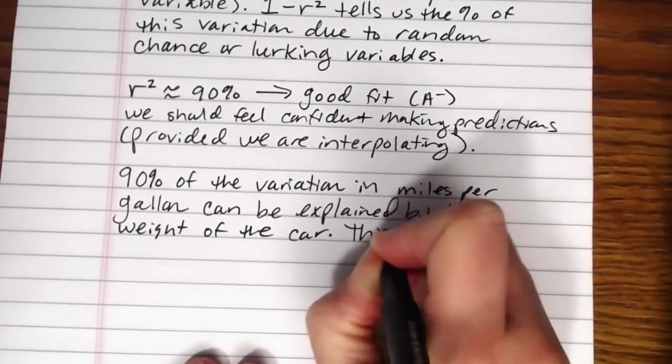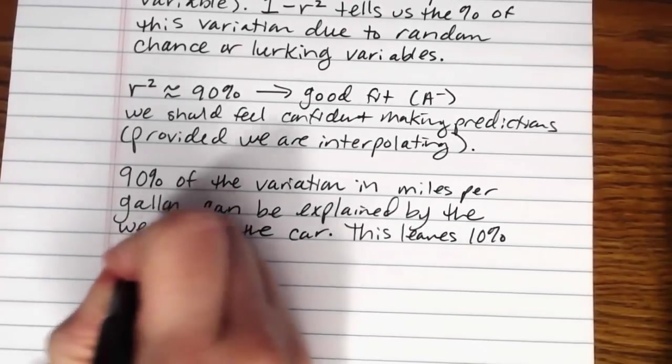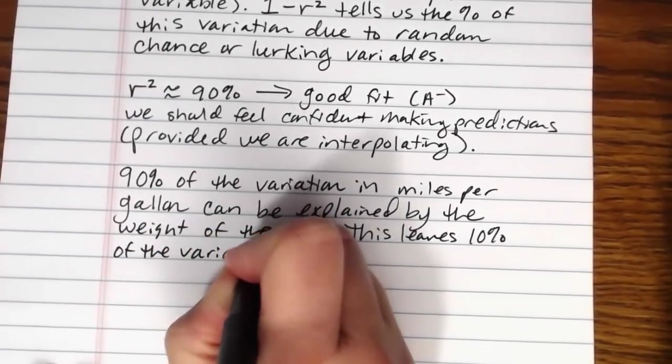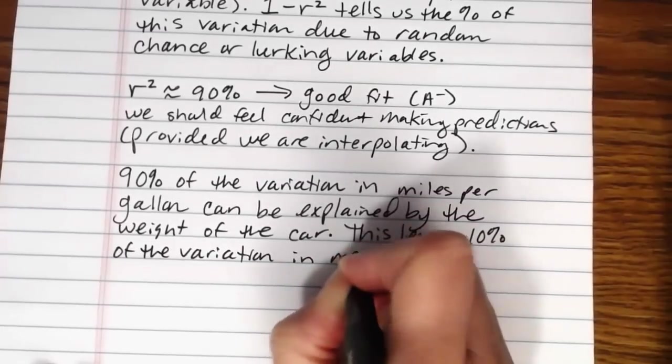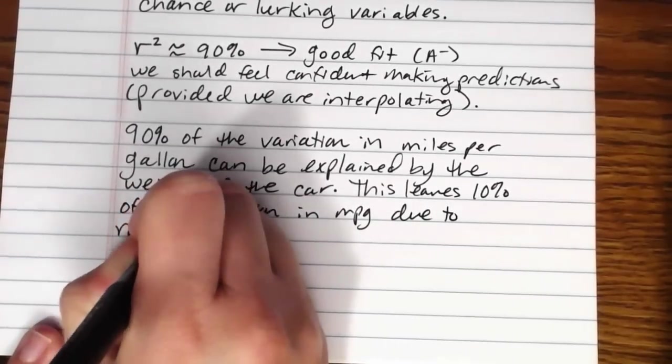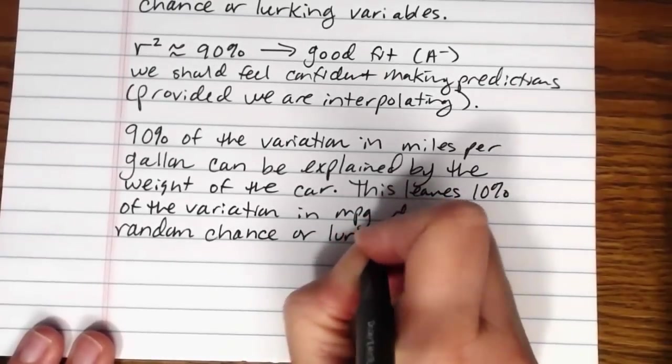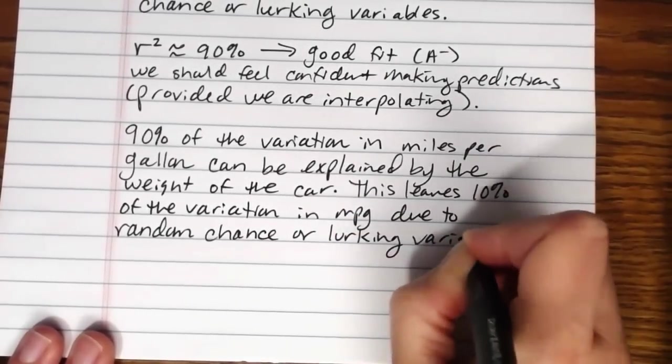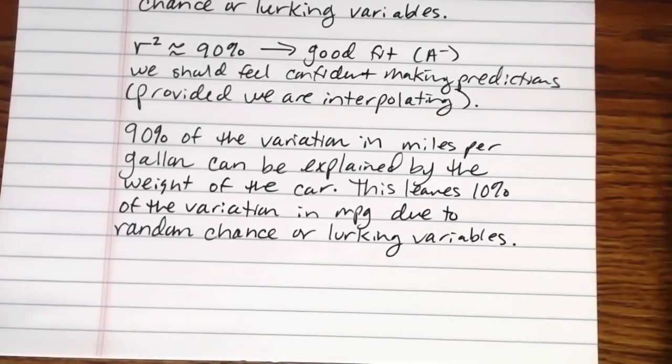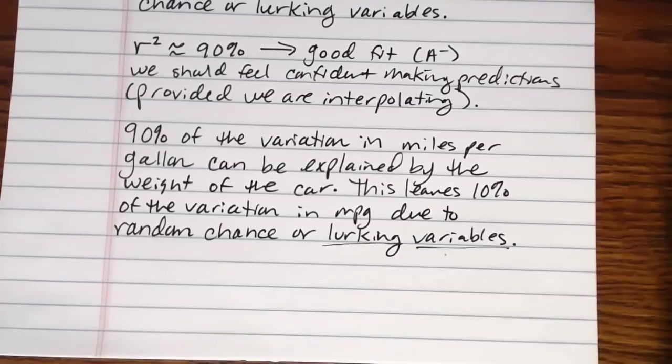This leaves 10% of the variation in miles per gallon due to random chance or lurking variables, such as, again, the size of the car, the age, all of that kind of stuff. Those would be lurking variables. They were things that we didn't collect data about, but that nevertheless could have an influence on the relationship that we're taking a look at.